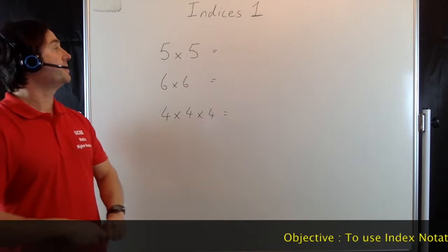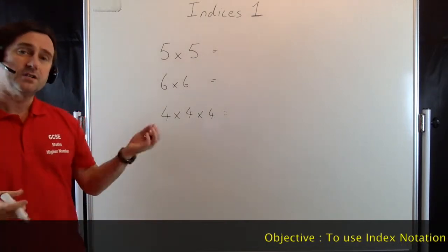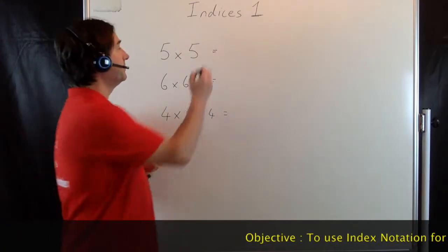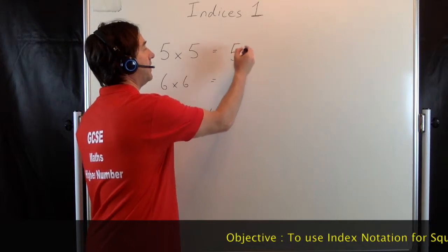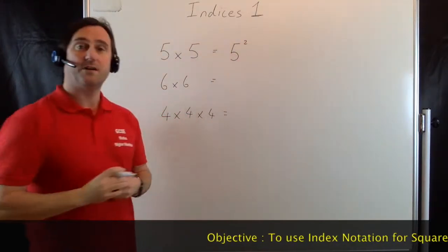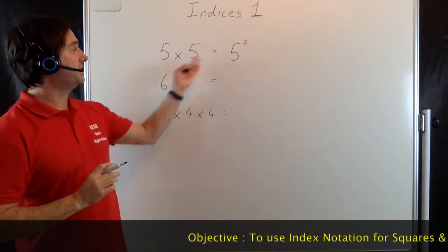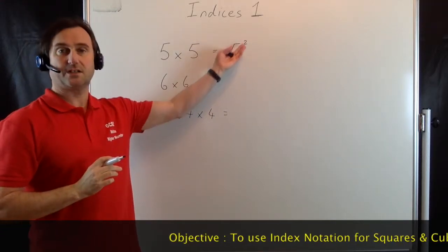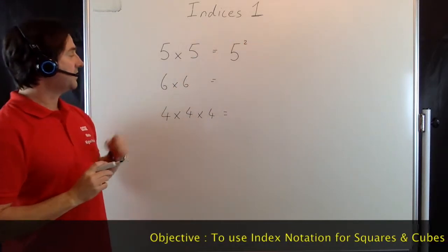So if we've got this expression here, 5 × 5, to write that squared we're going to write it as 5 to the power 2 or 5 squared. And this is writing this using what's known as index notation. 6 × 6 would then be written as 6 squared